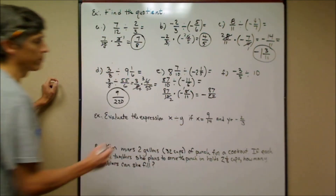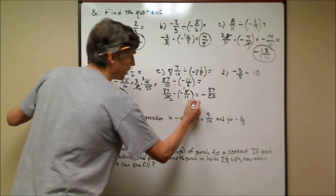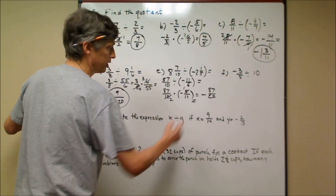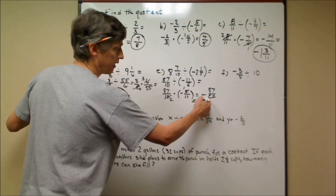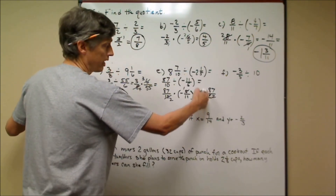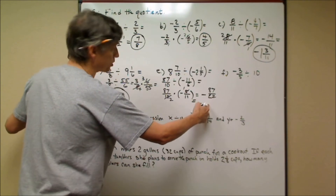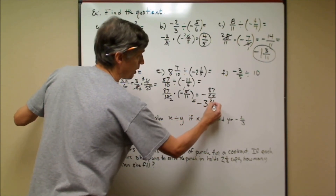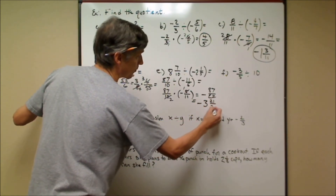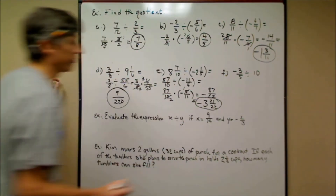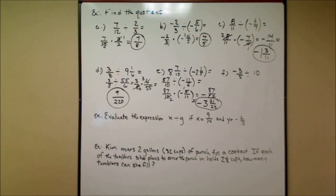The result −87/22 is an improper fraction, so convert it to a mixed number. 22 goes into 87 three times (66) with 21 left over. The answer is negative 3 and 21/22.